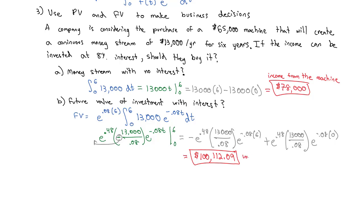That $100,112.09 is the future value from the machine and the interest combined. So this is looking like a really good business deal — I could invest $65,000 and at the end of six years I'll have $100,000. Until we look at the present value.